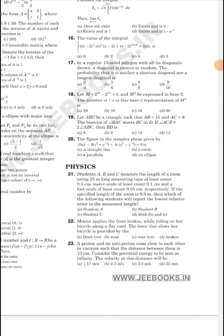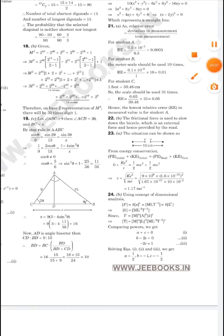My second question: Meena applies the front brakes while riding on her bicycle along a flat road. The force that slows her bicycle is provided by which - the front tire, road, rear tire, or the brakes? Yes, that was sure. The answer will be the road itself. Because we learned about the frictional force which is used to slow down the bicycle, which is an external force and hence provided by the road.